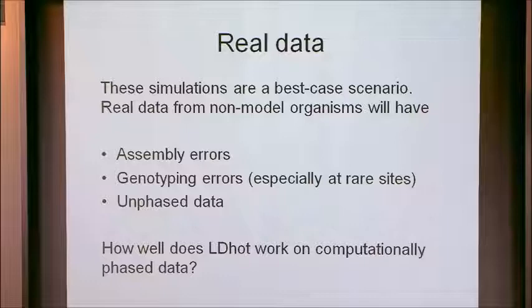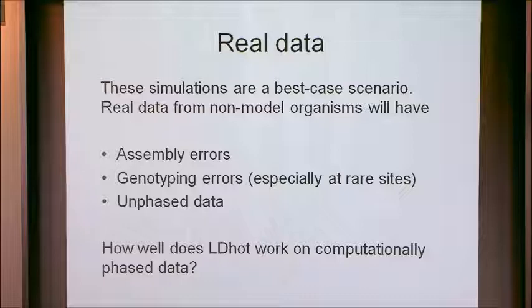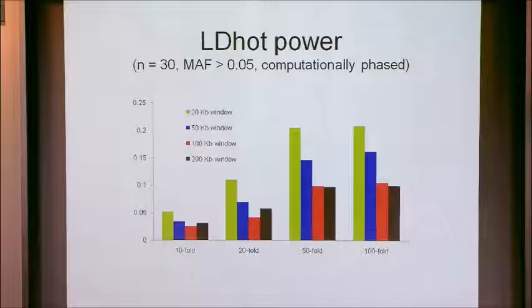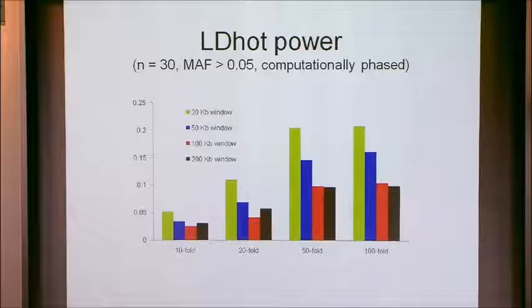Here's the power you get under that approach — it kind of looks like before except the y-axis has changed and all the powers are lower. In the previous version, the green bars went from about 16% up to 40-something percent. Now they're like 5 to 20-something percent. So roughly speaking, when you don't have haplotypic phase, the power is approximately halved.